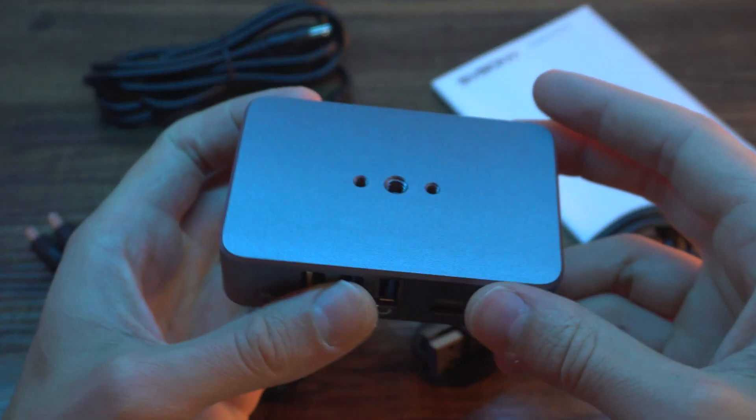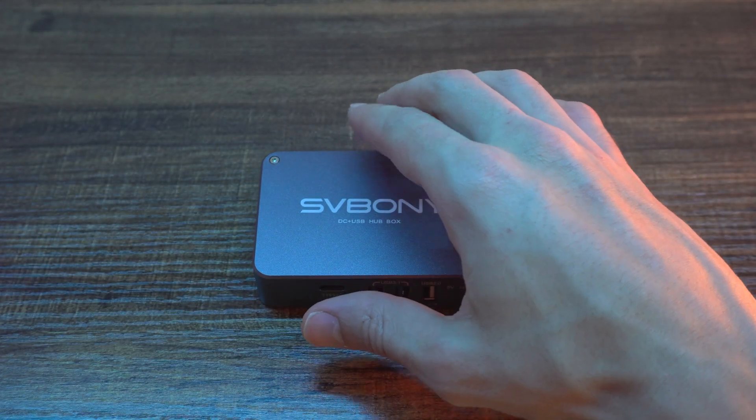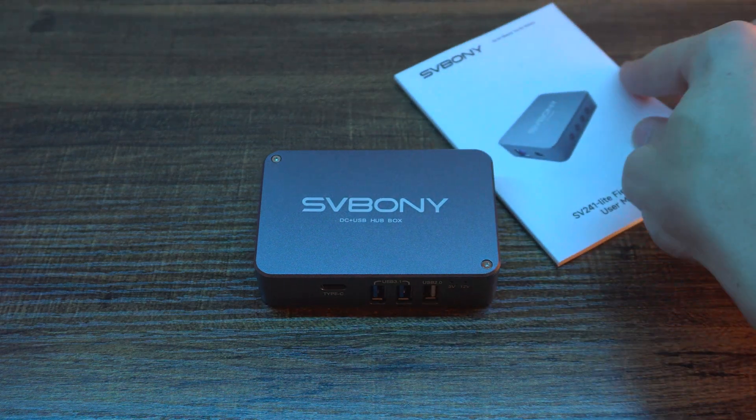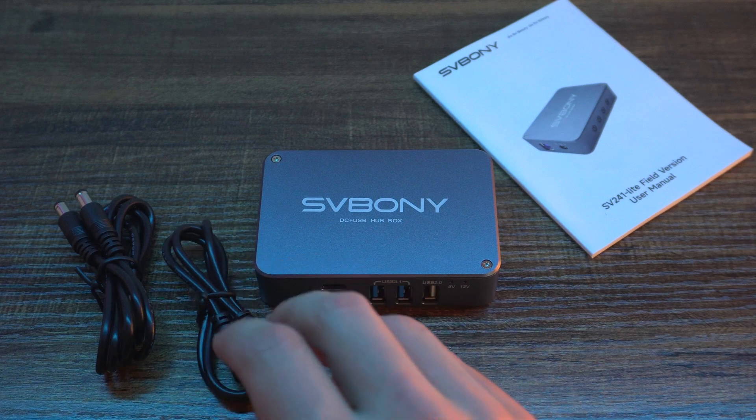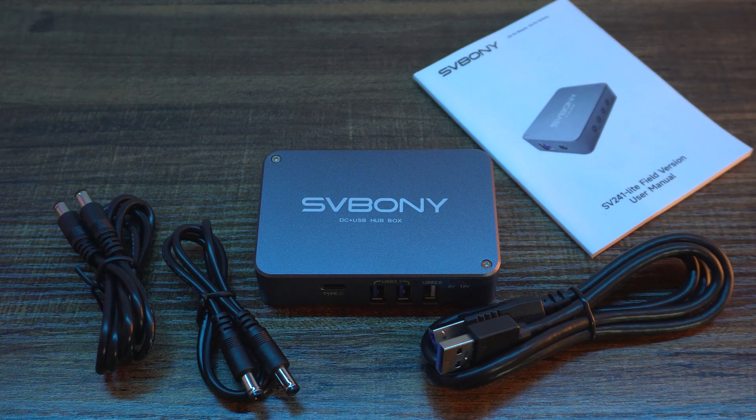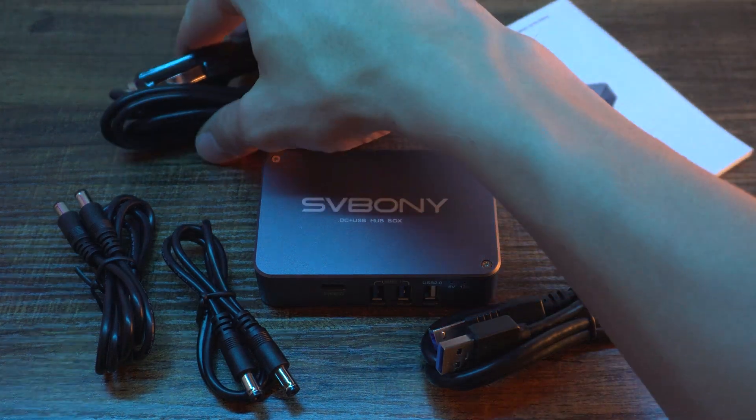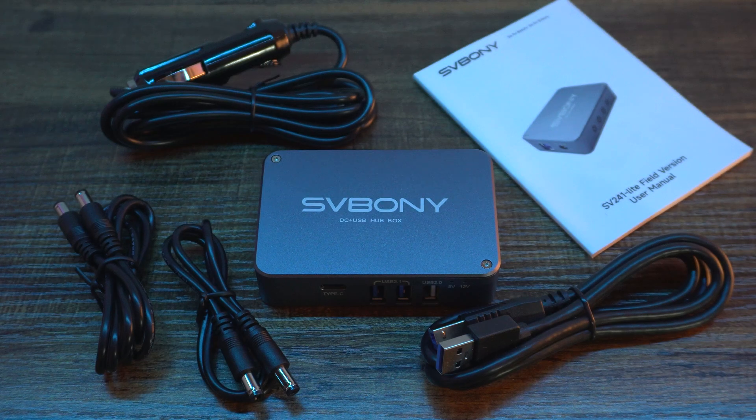On the bottom of the box there are also some mounting threads and in the packaging you will get the power box itself of course, then you're gonna get an instruction, there will be two DC to DC cables, one USB Type-B to USB 3.0 to basically connect the power box to computer and there will be a power cord with DC connection on one end and cigarette lighter on the other end.